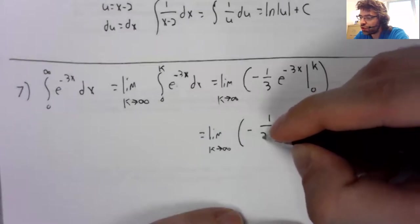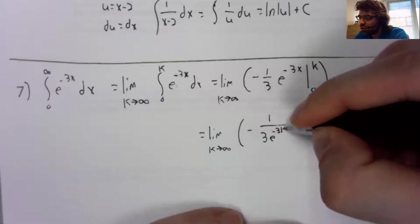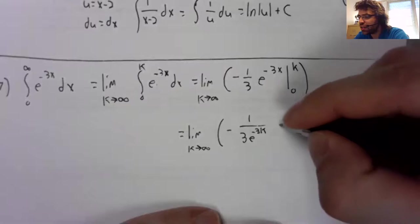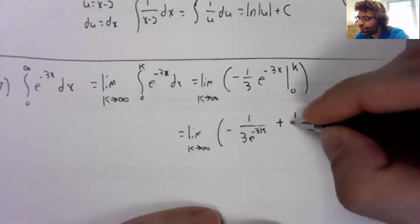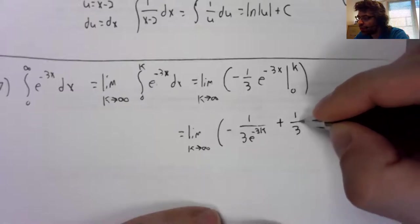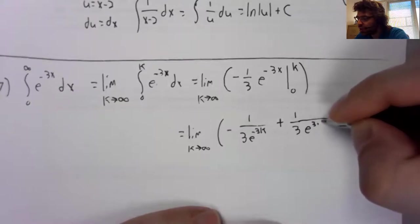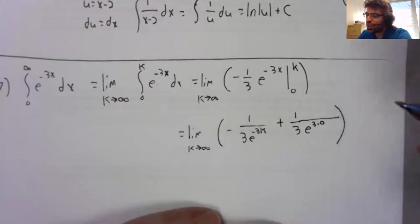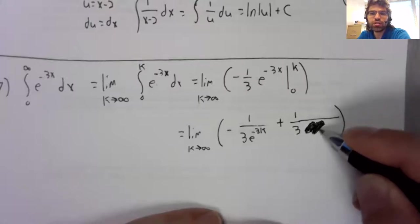Let's rewrite to this negative power. So we've got this. And then a negative minus negative one over three. E to the three times zero is one. Multiplying by one doesn't do anything.